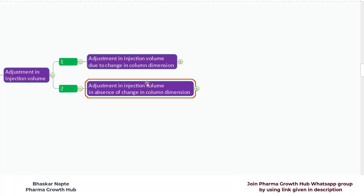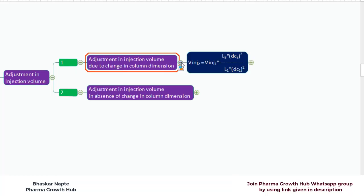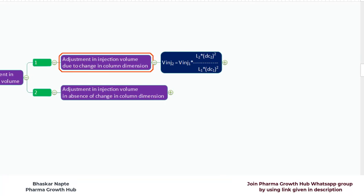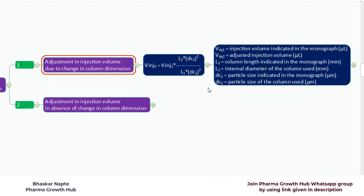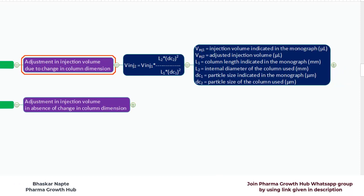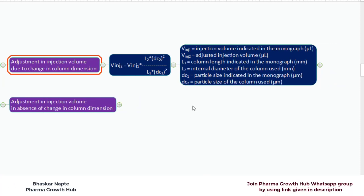If you are making a change in column dimensions, what is the injection volume that you need to adjust? Here is the calculation formula. Let me explain the terms that have been given in the calculation formula.